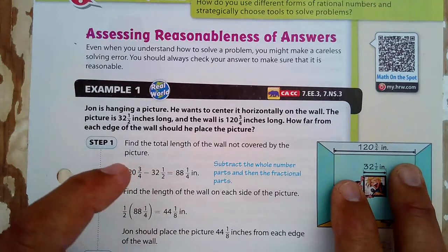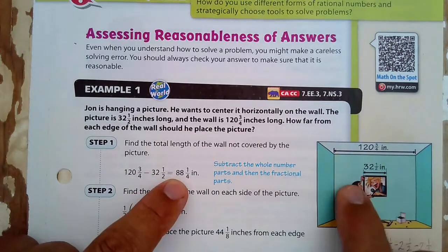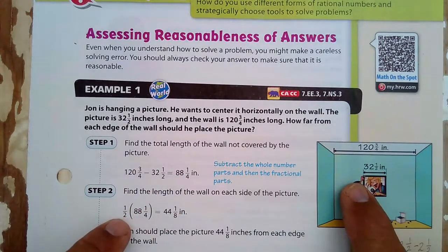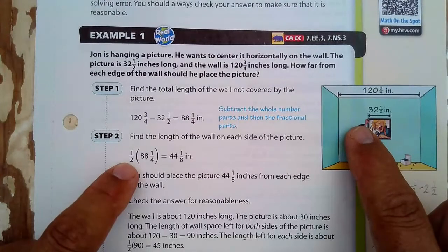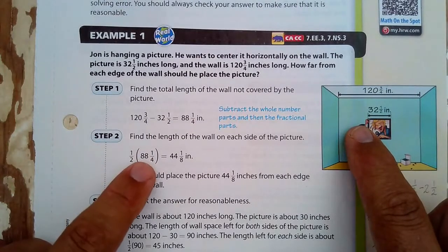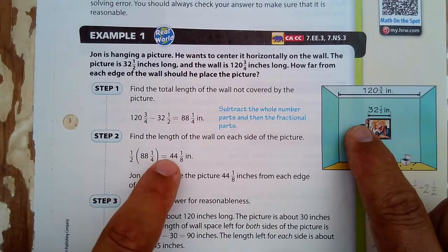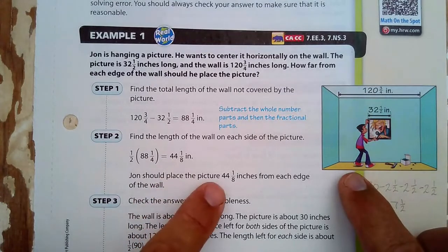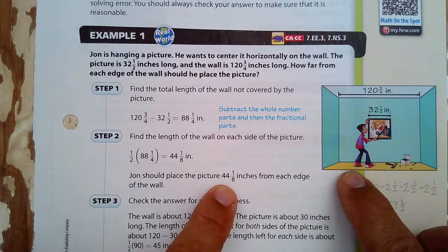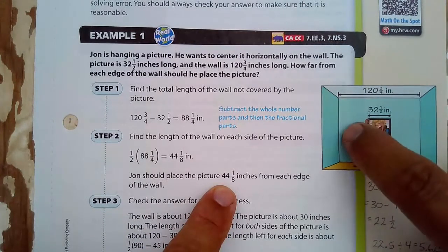Now what we do is we divide that by 2 to find out the measure of each. What they did is they multiplied by a half. Now multiplying by a half is the same thing as dividing by 2. One half times that is 44 and 1/8. In fact, half of 88 is 44 and half of a fourth is an eighth. So John should place the picture 44 and 1/8 inches from each edge.